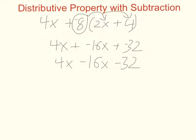So that's how we can handle the distribution. Of course, the 4x and the negative 16x would combine as well, and this whole thing would be equivalent to negative 12x minus 32.